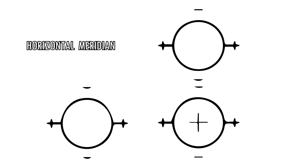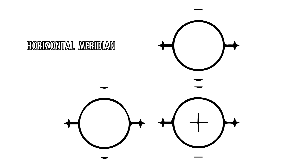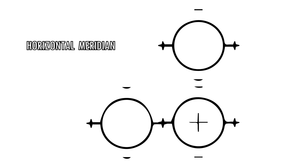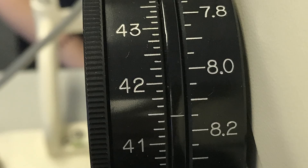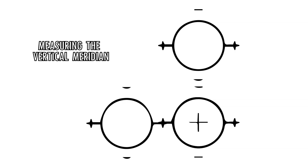After the axis has been established, turn the horizontal measuring drum and the left-hand plus sign will move to the right or left. Move this plus sign until it is exactly superimposed on the plus sign of the central focusing circle. This completes the setting for the near horizontal meridian. The scale of the horizontal measuring drum indicates the actual dioptric power of the cornea in the horizontal meridian. The drum may be left at this position during the rest of the procedure.